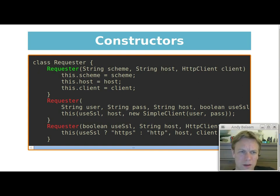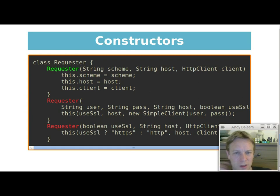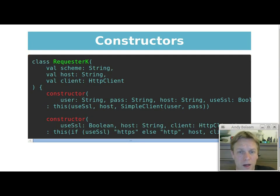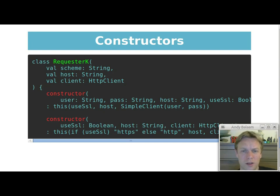That constructor calls a third constructor, which also takes 'useSSL' but not username and password, and based on whether you said you wanted SSL, it either provides HTTPS or HTTP as the scheme, then calls the top constructor. So there are three constructors — they call each other and all end up calling the one at the top. One makes its own HTTP client for you, and the others require you to pass in an HTTP client from outside. Different ways of constructing this object, but you always end up with a similar-looking object at the end. This class is constructed in a way that I often try and construct my classes — though sometimes I think you should just only ever have one constructor.